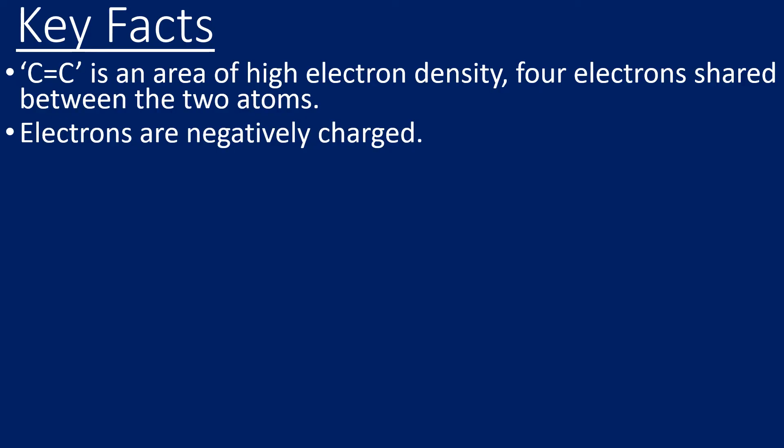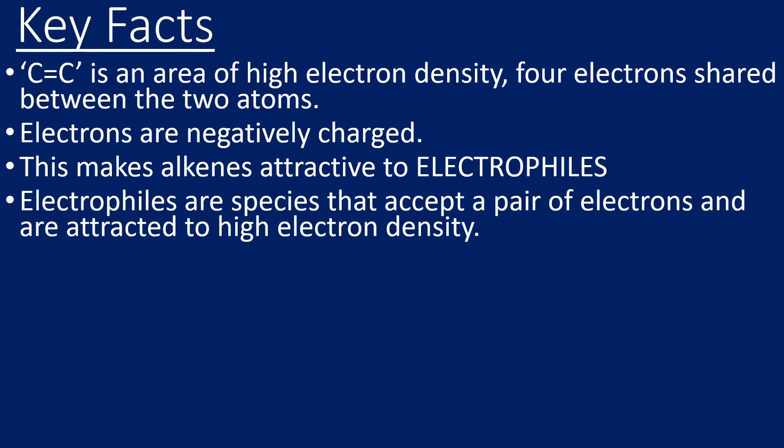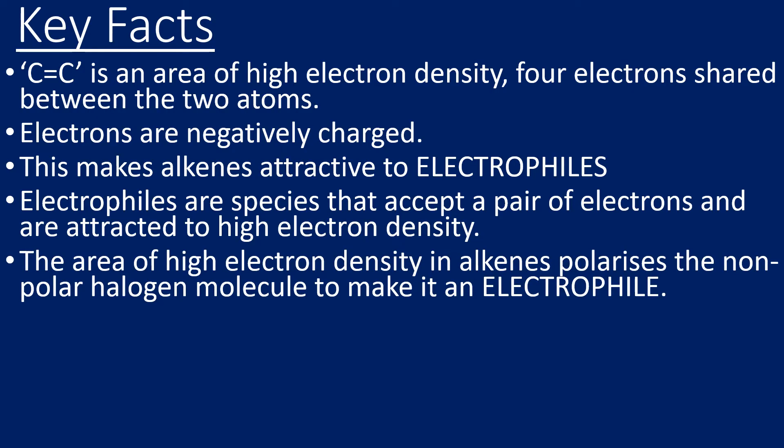Electrons are negatively charged, that means that alkenes are attractive to electrophiles. An electrophile is a species that will accept a pair of electrons. In this case the electrophile will accept the pi electrons, and electrophiles are attracted to areas of high electron density.